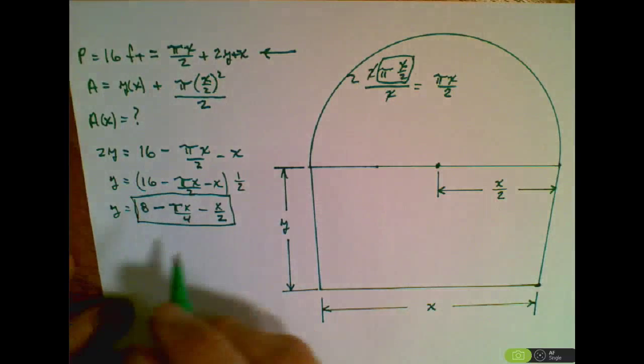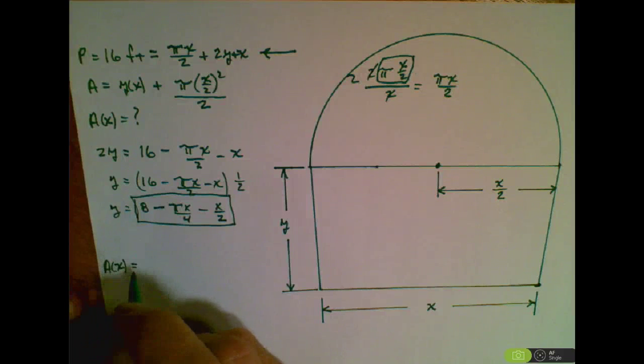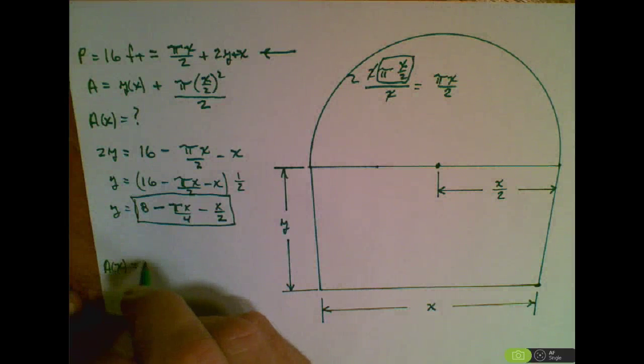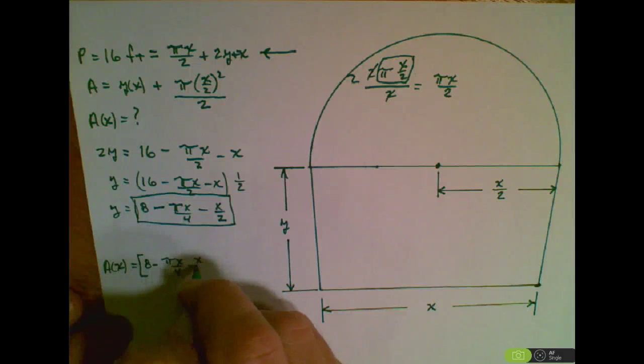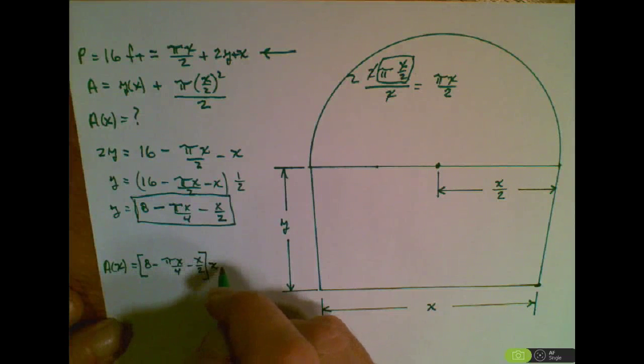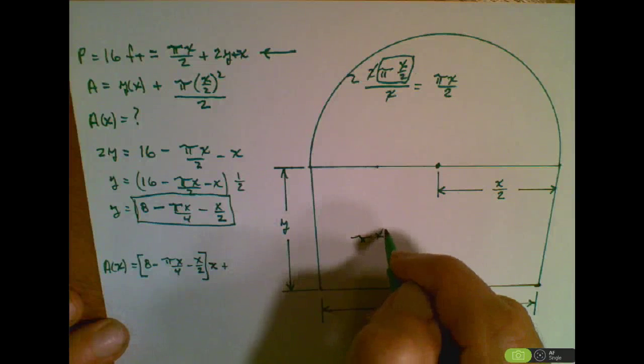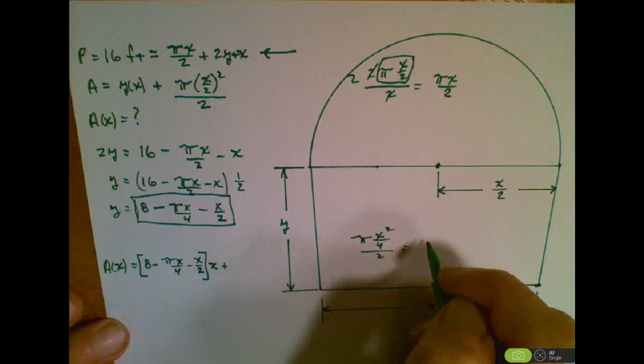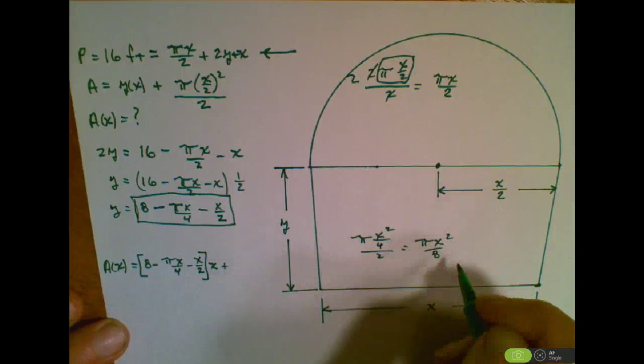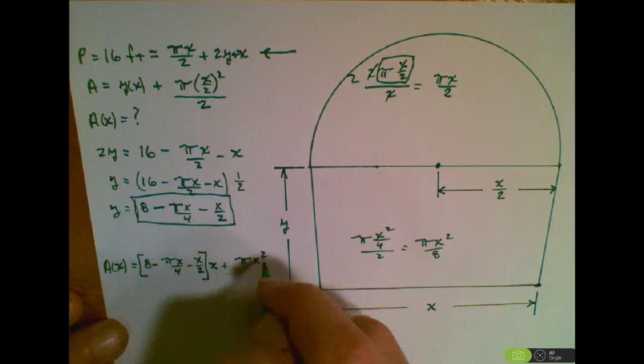Finally, area as the sole function of x is equal to this expression we just wrote: (8 - πx/4 - x/2) times x, plus, let's simplify this term. This is π(x/2)² all over 2, which we could write as πx²/8. So we've simplified that term to be πx²/8.